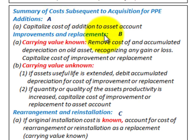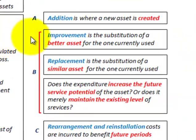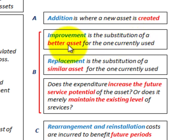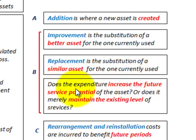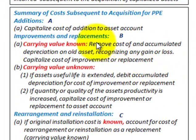For improvements and replacements: an improvement is the substitution of a better asset for the one currently used, while a replacement is the substitution of a similar asset for the one currently used. The key question is whether the expenditure increases the future service potential of the asset, or merely maintains the existing level of services.